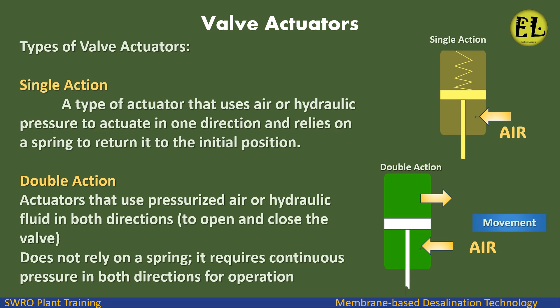Types of valve actuators. Single action: a type of actuator that uses air or hydraulic pressure to actuate in one direction and relies on a spring to return it to the initial position. Double action: actuators that use pressurized air or hydraulic fluid in both directions to open and close the valve; does not rely on a spring and requires continuous pressure in both directions for operation.